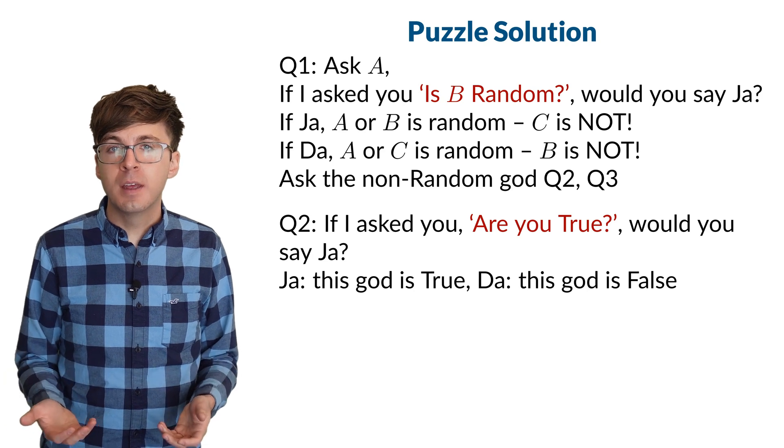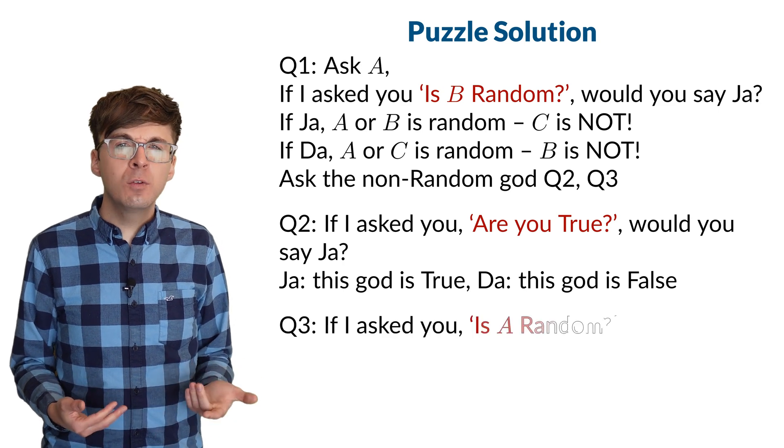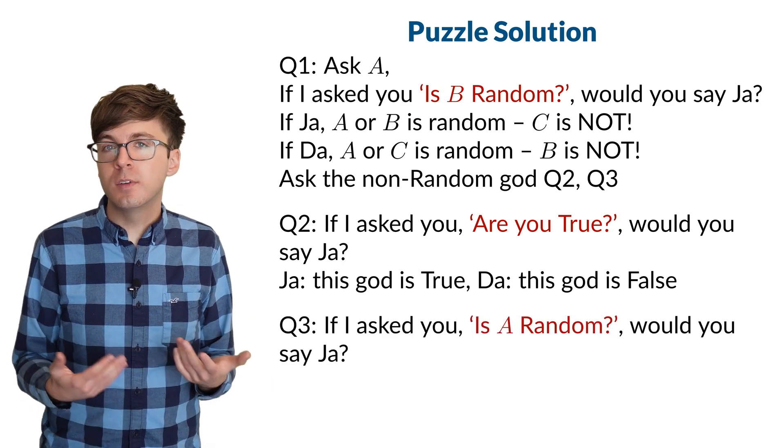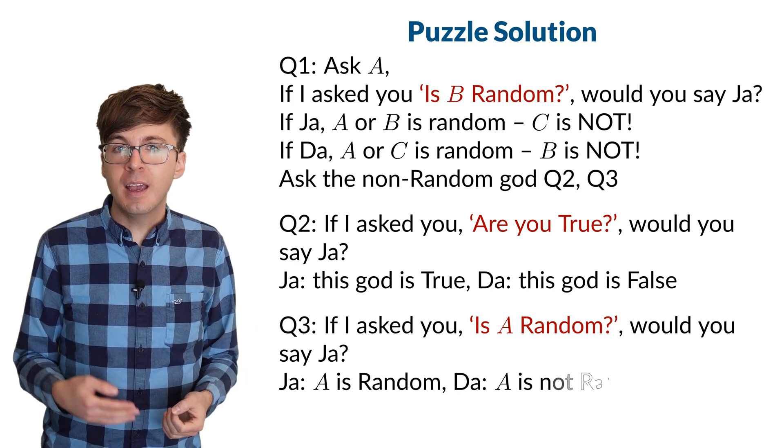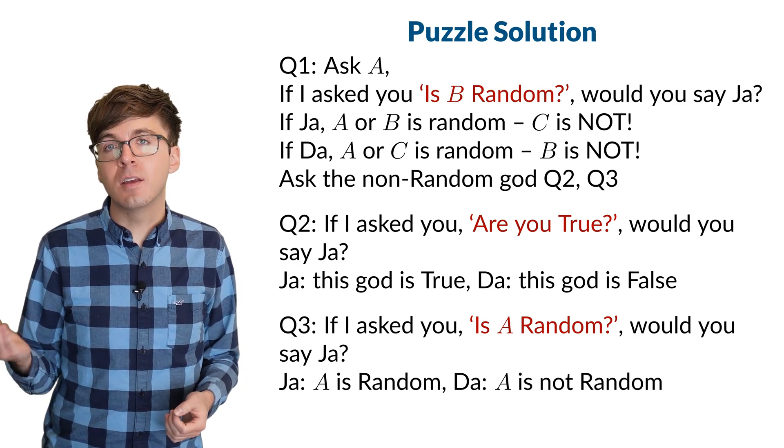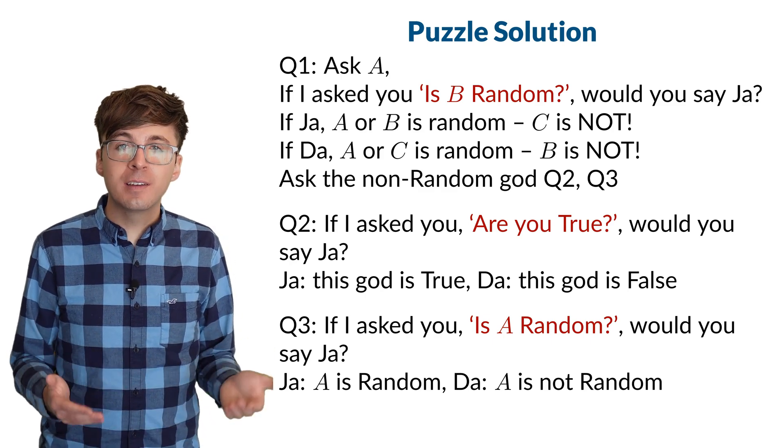Now we just have to identify which of A and C is random, and we still have one more question to ask. So we can ask B, if I asked you, is A random, would you say ya? An answer of ya means that A is random. And an answer of da means that A is not random. And now by the process of elimination, we know the identities of A, B, and C.